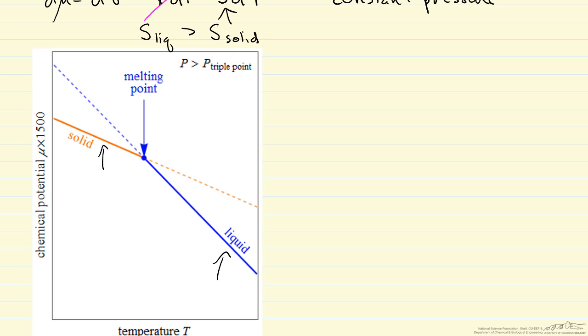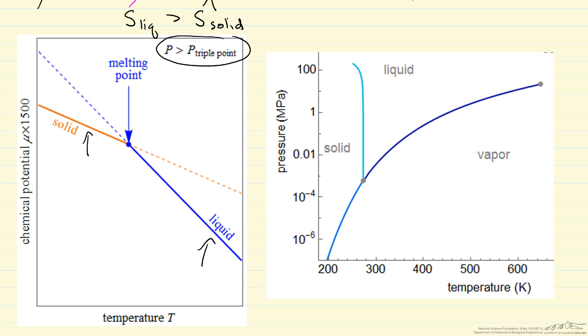Notice in this plot it says the pressure is greater than the triple point pressure. Let's look at a pressure-temperature diagram to understand why. On the right we're showing log of pressure versus temperature, and pressure above the triple point pressure means we're in this region where we have solid-liquid equilibrium.